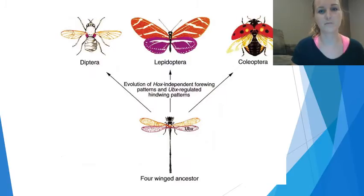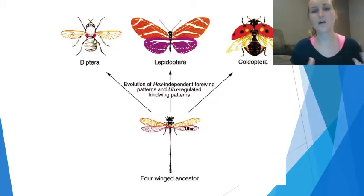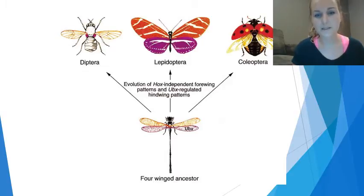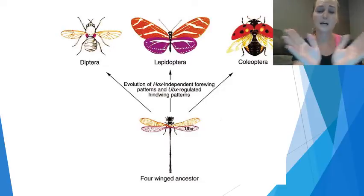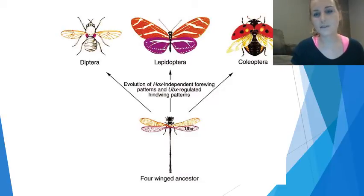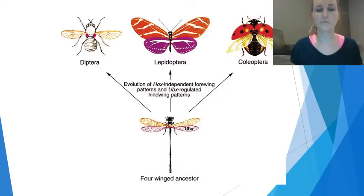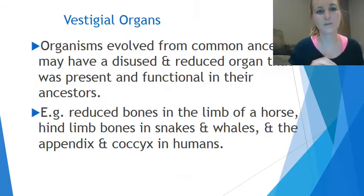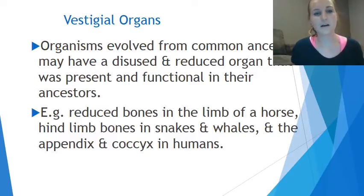Same structure is the important thing, and remember same structure means a common ancestral origin. Here's another example: a four-winged ancestor is our common ancestral origin, and you can see it has branched out into different types of insects which all still have that four-winged structure but look different and have developed differently based on their environment.